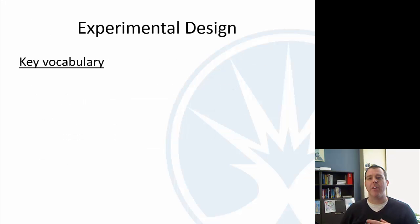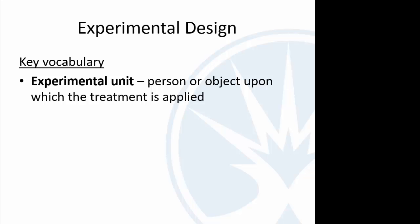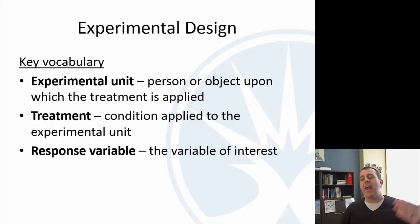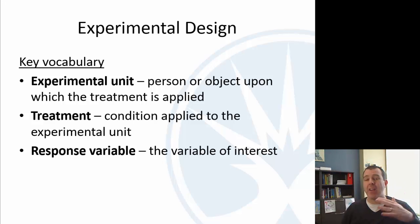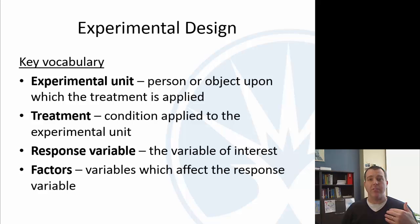Experimental design — some of the key vocabulary here. The individuals being experimented on are called the experimental units. The thing that we do is called the treatment. What we're getting out of this — the thing we're interested in — is called the response variable. The response variable often has a lot of different things that affect it. We hope the treatment affects it, but it might have a lot of other things as well, and those are called factors. So: experimental units are the individuals, the treatment is the thing we're applying, the response variable is what we're measuring as a response to our treatment, and factors are all the other different things that might affect our response variable.